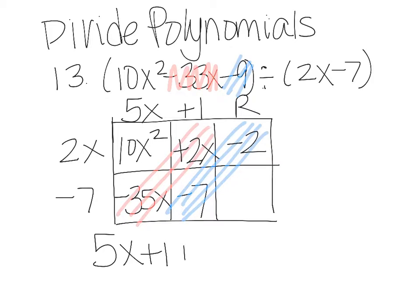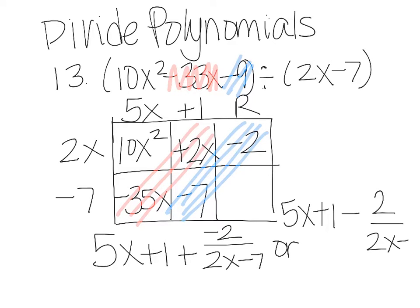And you can either write plus negative 2 over 2x minus 7, or you can write 5x plus 1 minus 2 all over 2x minus 7.